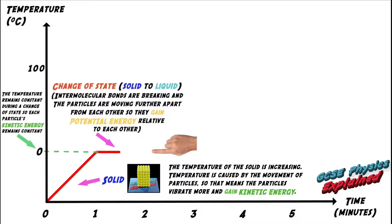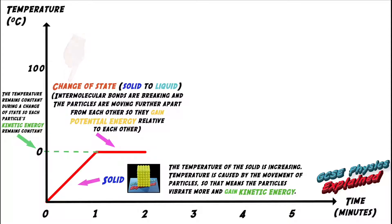Then there's a change of state as the solid melts into a liquid. The intermolecular bonds are breaking and the particles are moving further apart from each other, so they gain potential energy relative to each other. It's important to note that the temperature remains constant during the change of state, so each particle's kinetic energy remains constant.